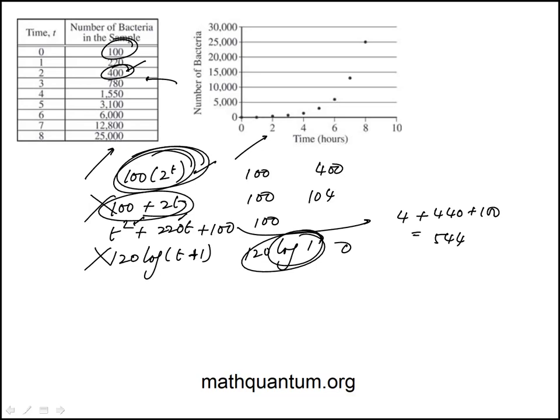If you want, you can test it for one more data point at t equals 6: 100 times 2 to the 6. 2 to the 5 is 32, 2 to the 6 is 64, so 6400, which is somewhat close to that. The answer is 100 times 2 to the power of t, answer choice A.